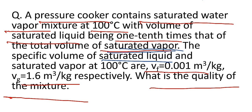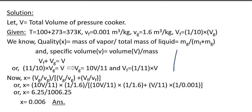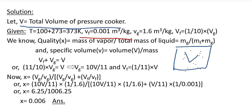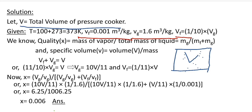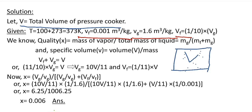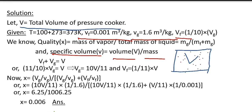Let's go for the solution. Suppose this pressure cooker has a total volume V. This pressure cooker contains a saturated vapor and saturated water mixture. Specific volume of saturated liquid and saturated vapor are given, where small v denotes specific volume and capital V denotes volume. The formula for quality or dryness fraction of a mixture is given by mass of vapor per unit total mass. Since mass of vapor and total mass are not directly given, we use the formula: specific volume equals volume per unit mass.